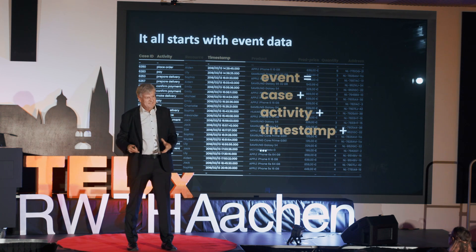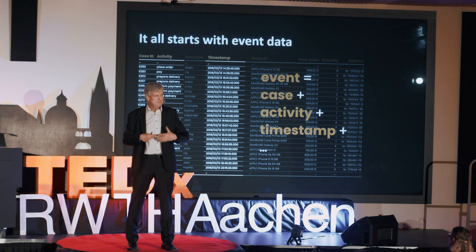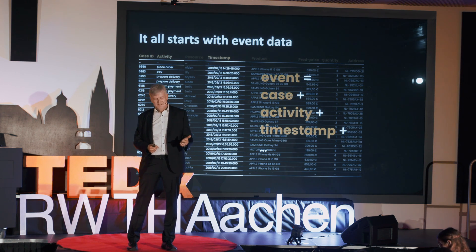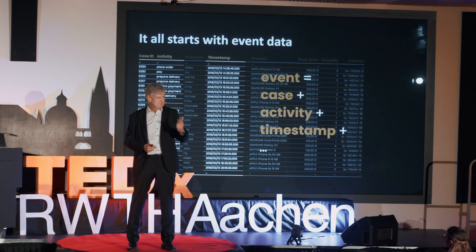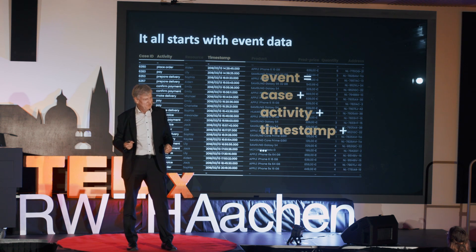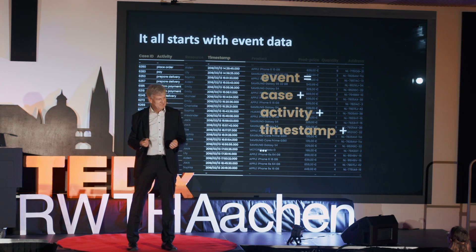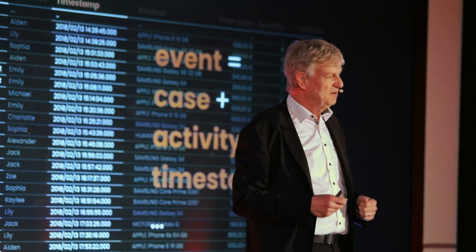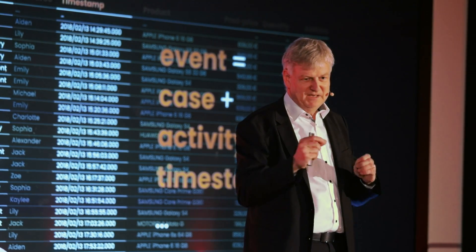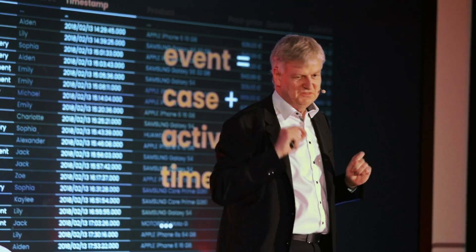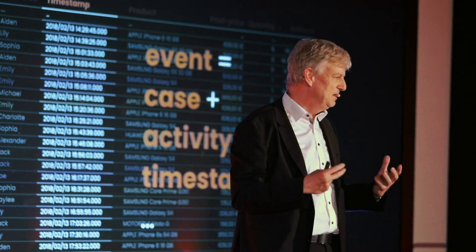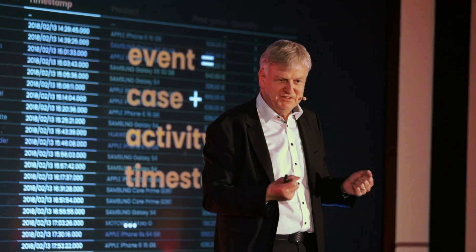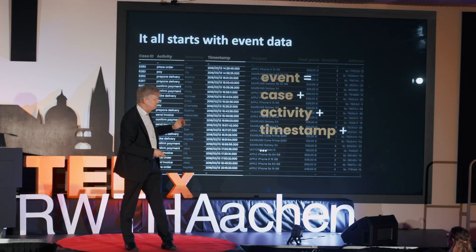To do process mining, we reduce this to something very simple. For every event — everything that has happened — we need to record a timestamp when it happened. The second thing we need is the activity: payment, placing an order, taking a blood test in a hospital, a student getting a grade. All of these events need to be related to what we call a case. In this example, a case is an order, but you can also think of every COVID patient you are treating as a case. We are doing this here in Aachen to analyze how COVID patients are being treated, and also to analyze how students are studying and why they drop out.